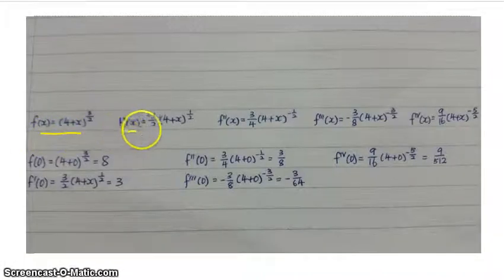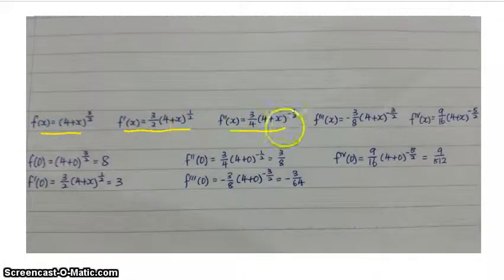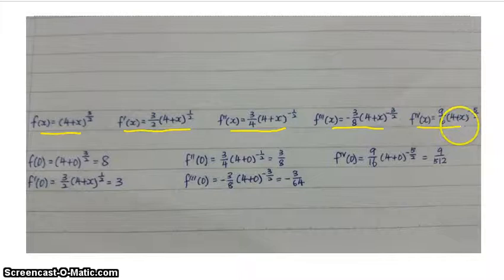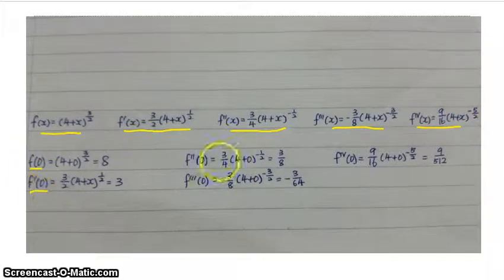These are the equations that we obtained from the previous step. After that, we need to substitute x equal to 0 into each of the equations.